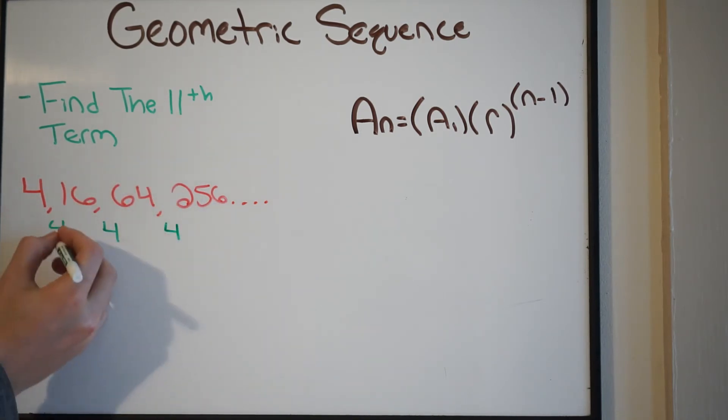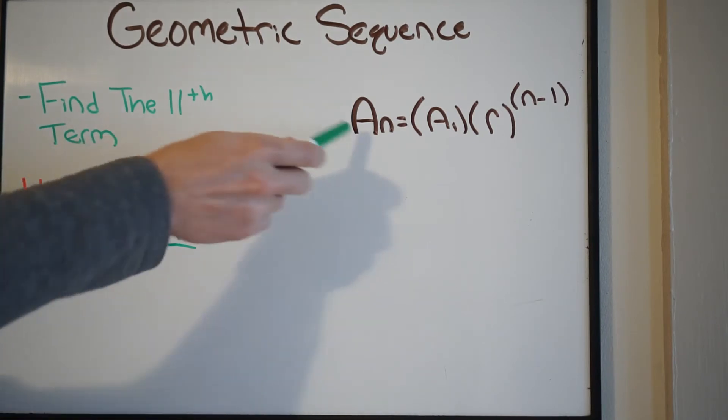So we can see that we definitely have a common ratio here, meaning that this is, in fact, going to be geometric. So at this point, all we have to do is use our equation.